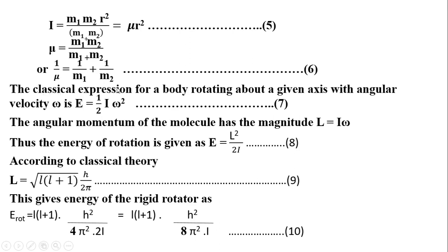The classical expression for a body rotating about a given axis with angular velocity omega is E = ½·I·ω², equation number 7. The angular momentum of the molecule has the magnitude L = I·ω. Thus, the energy of rotation is given as E = L² / (2I), equation number 8.